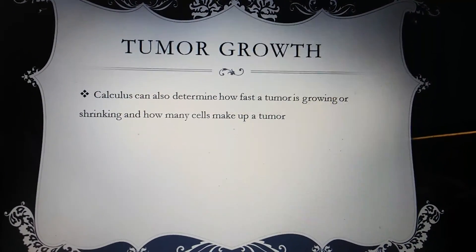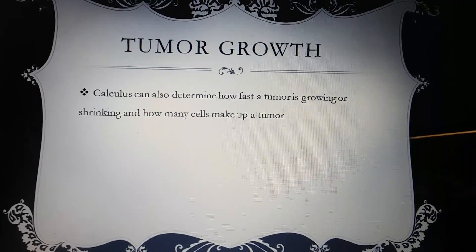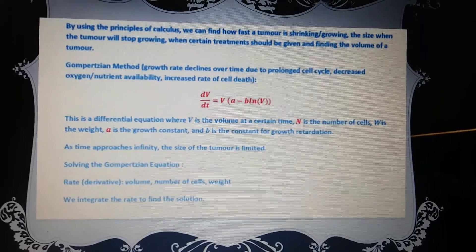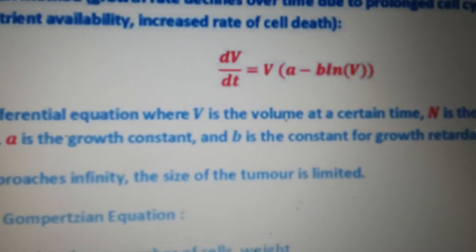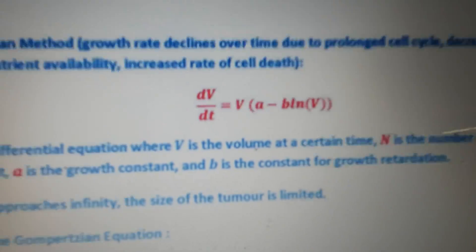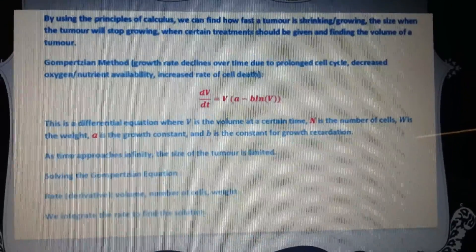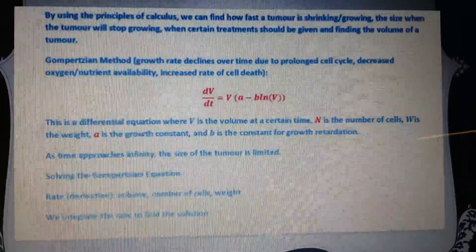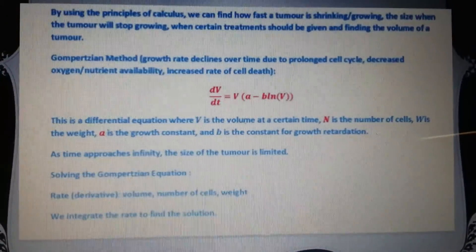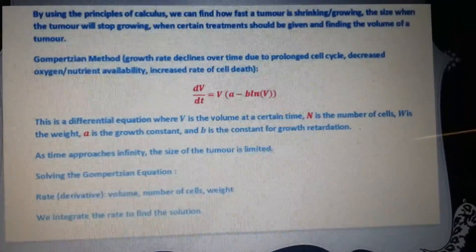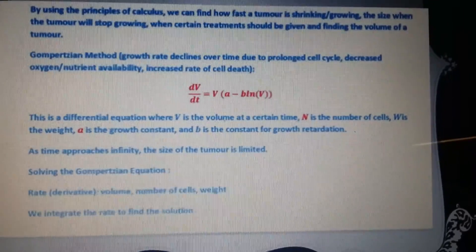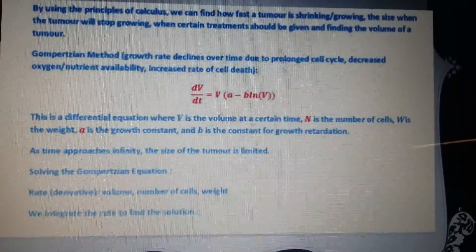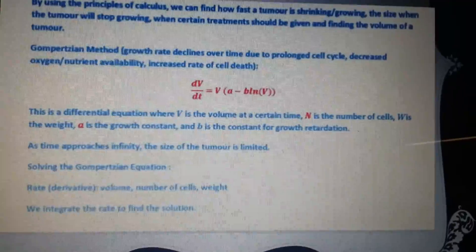As well as tumor growth. Calculus can also determine how fast a tumor is growing or shrinking and how many cells make up a tumor. Now the dV/dt, we use this a lot in calculus. By using the principles of calculus, we can find out how fast a tumor is shrinking, growing, and size when a tumor will stop growing, when certain treatments should be given, and finding the volume of tumor. It's called the Gompertzian method. Growth rate declines over time due to prolonged cell cycle, decreased oxygen and nutrient availability, increased rate of cell death.